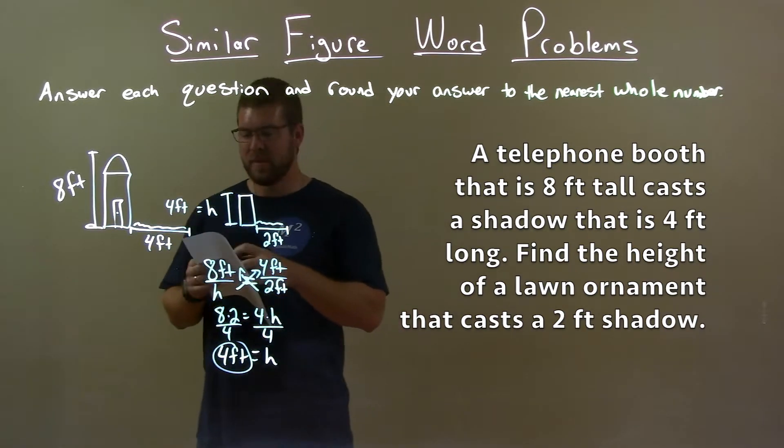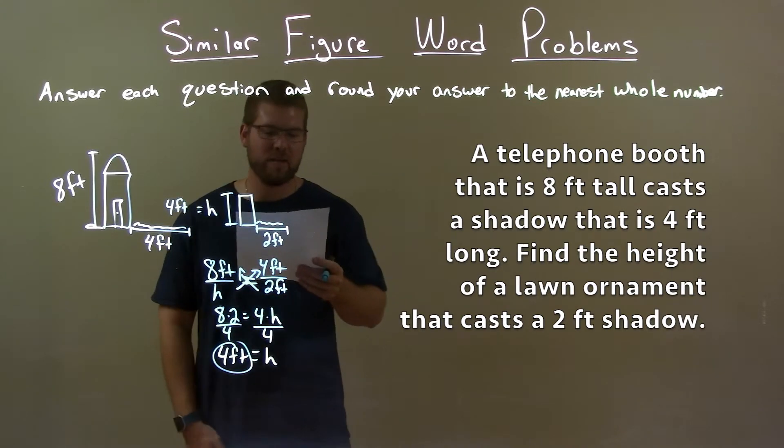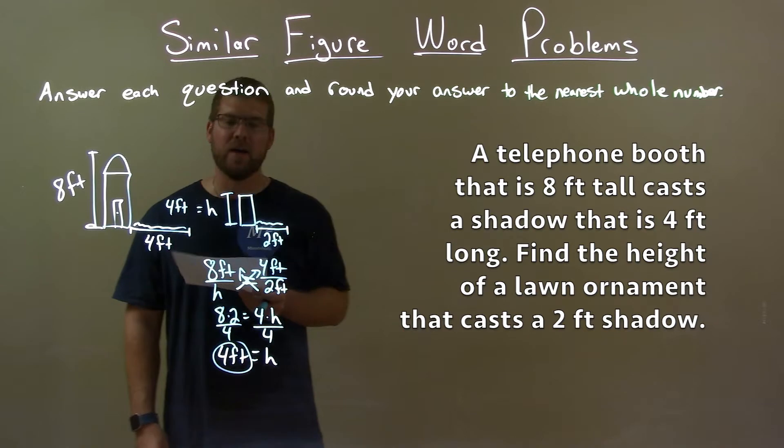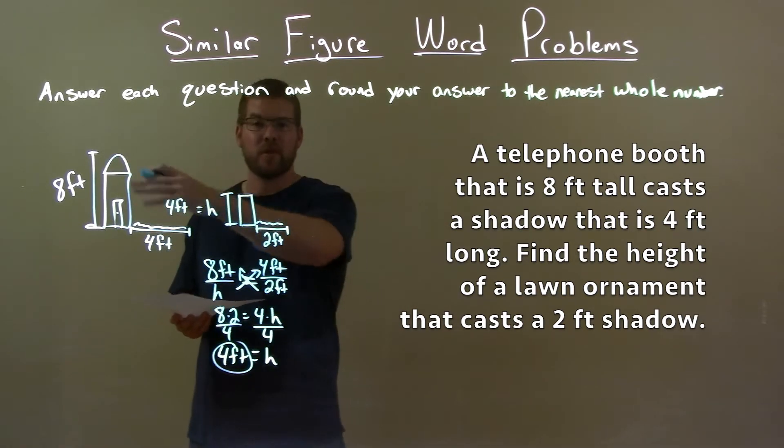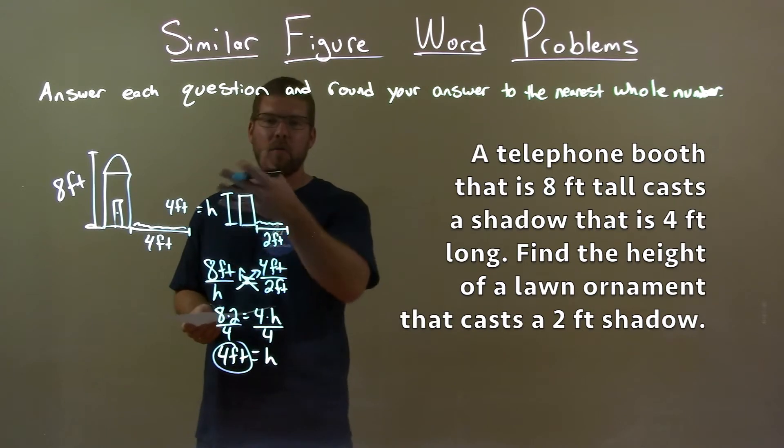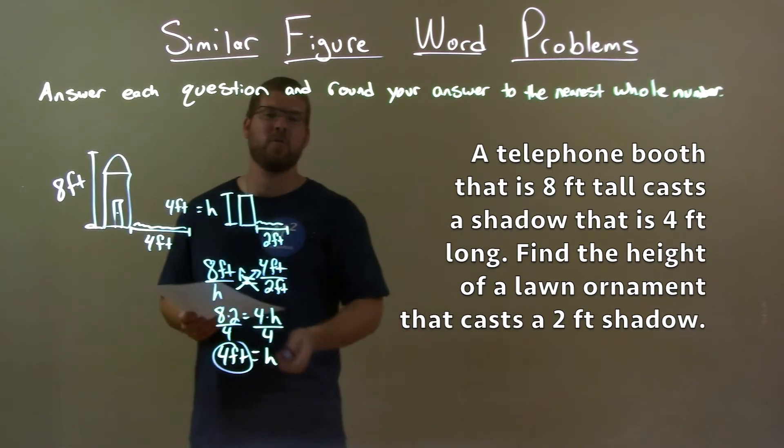Quick recap. We're given a telephone booth that is 8 feet tall casts a shadow that is 4 feet long. Find the height of the lawn ornament that casts a 2 foot shadow. We drew a picture diagram, then we set up a proportion with what we were given. We found the missing variable using algebra and got the final answer to be 4 feet.